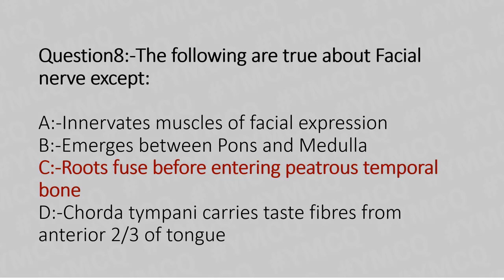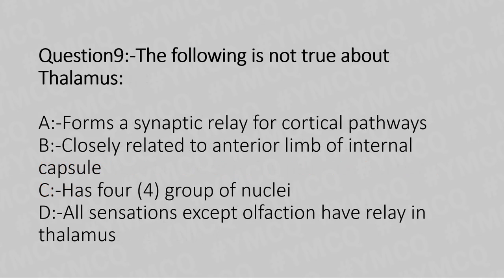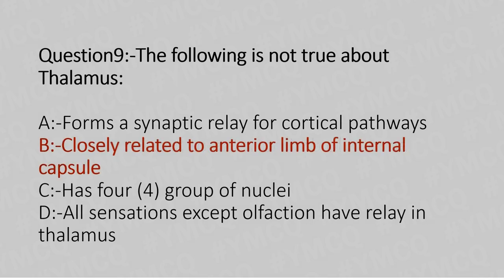Now let's move to question number 9. The following is not true about the thalamus — option A: forms a synaptic relay of cortical pathways, option B: closely related to the anterior limb of the internal capsule, option C: has four groups of nuclei, option D: all sensations except olfaction have a relay in the thalamus. The answer is option B, closely related to the anterior limb of the internal capsule.